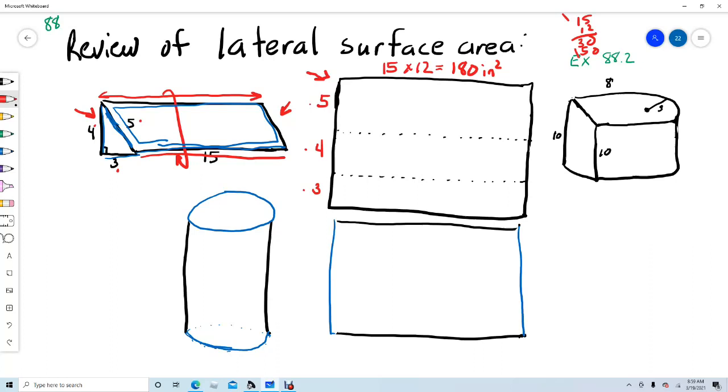If they ask for the lateral surface area, that's all you have to do. If they ask for the surface area, well, then you would have to include the ends, either end, by using the formula for the area of a triangle. Anybody remember what that is? Formula for the area of a triangle, one half base times height.